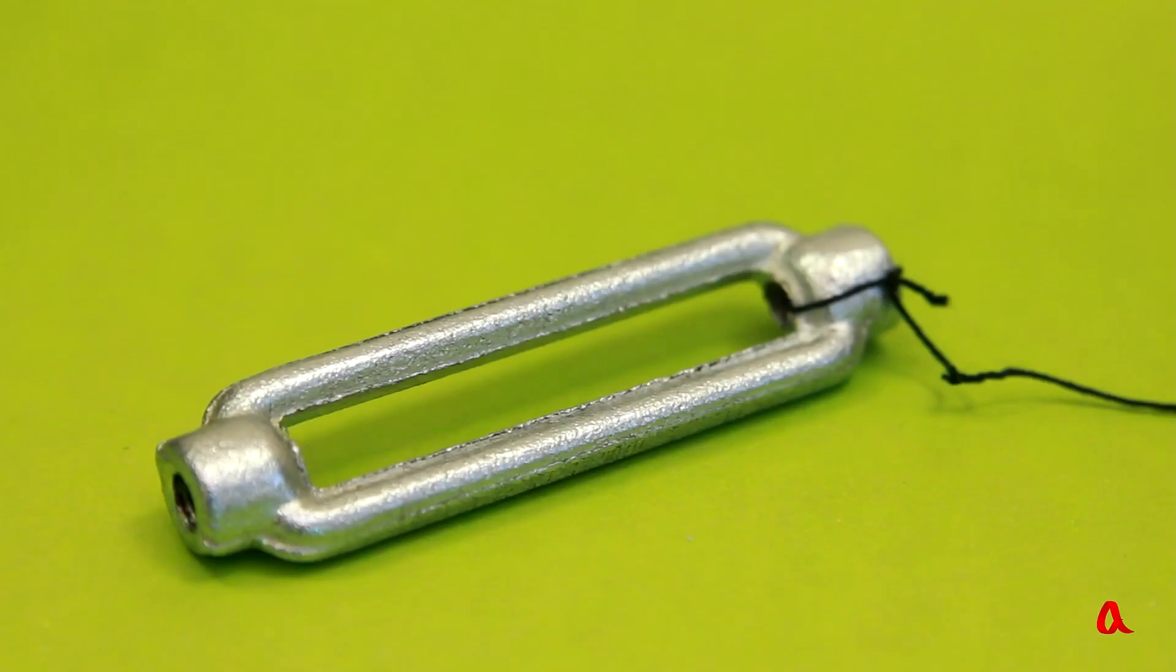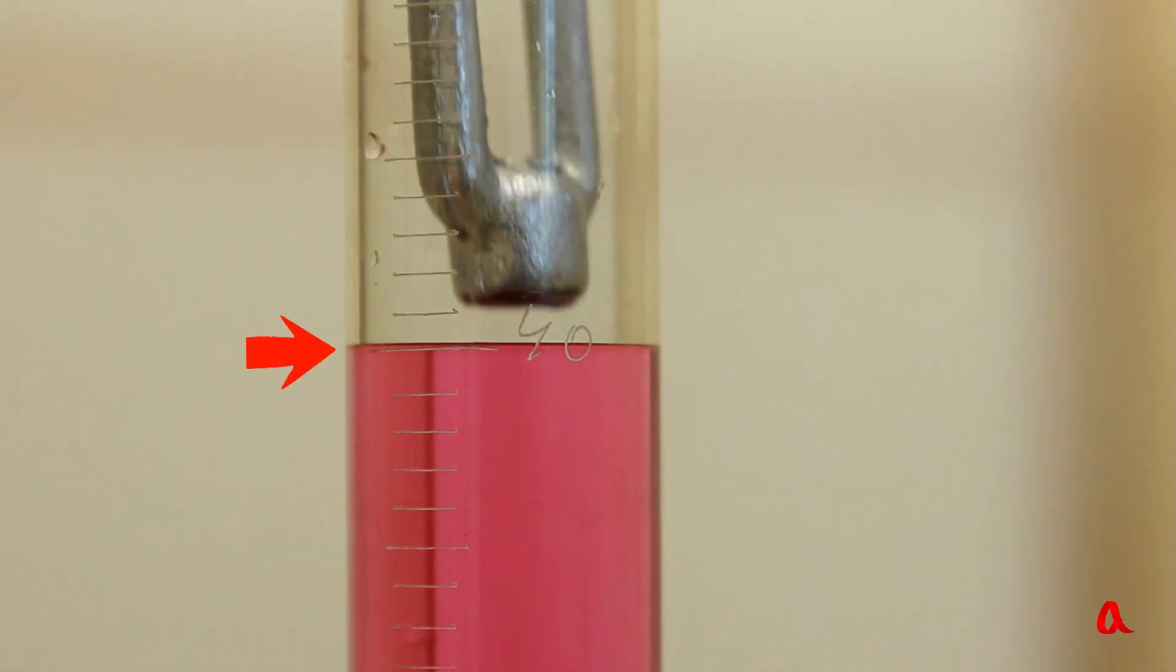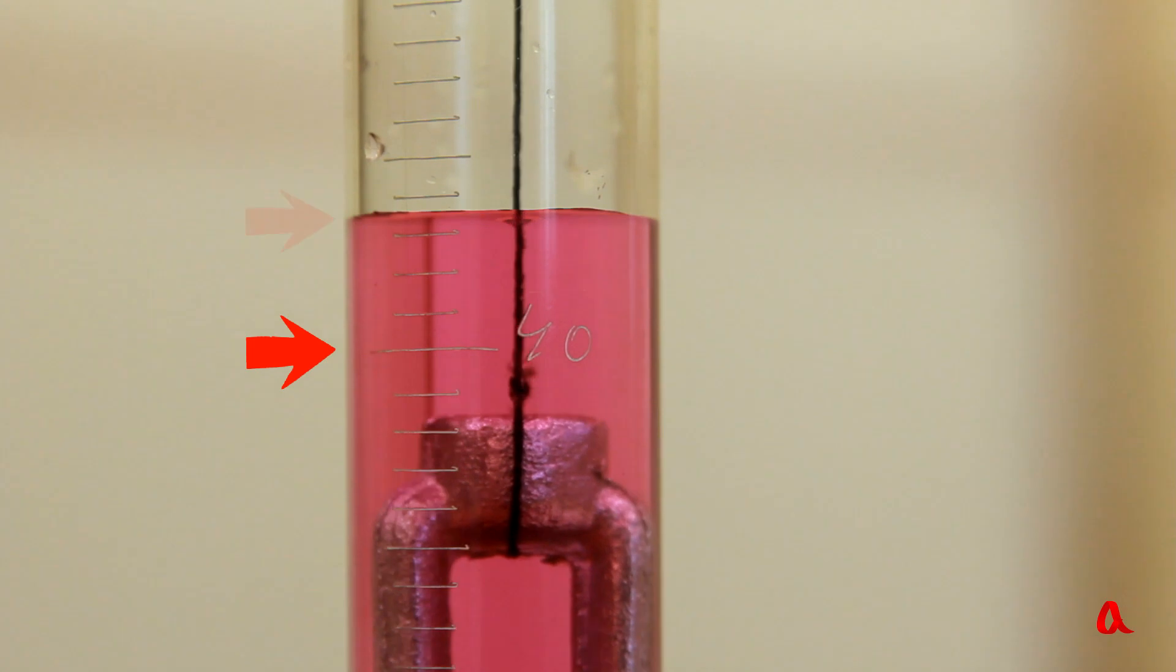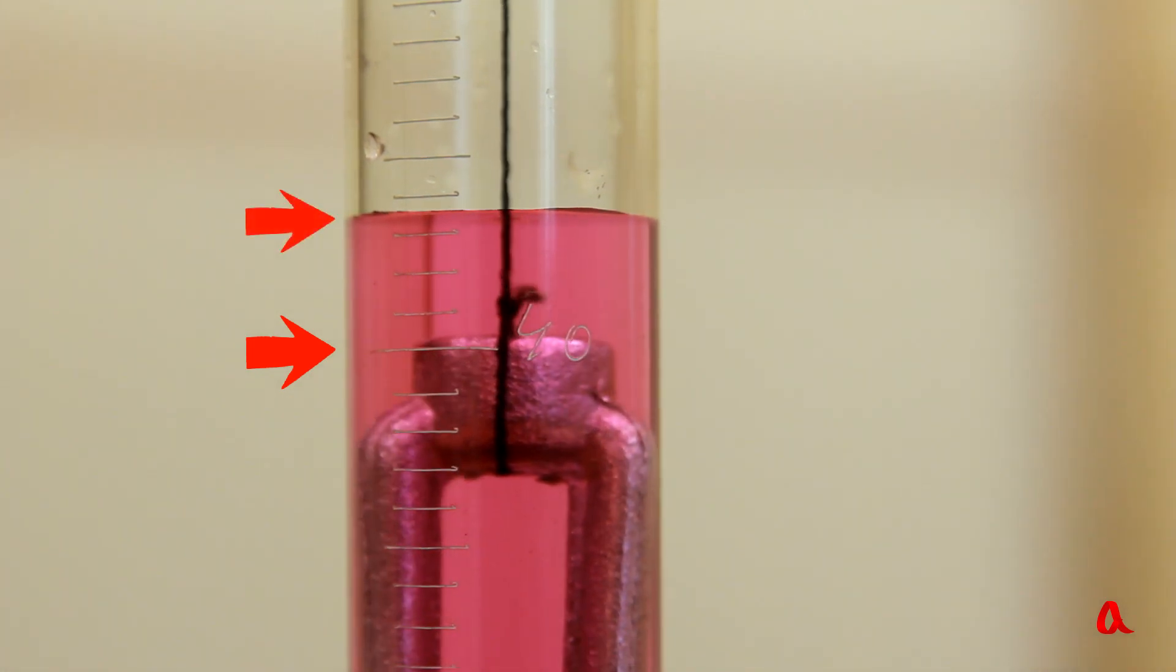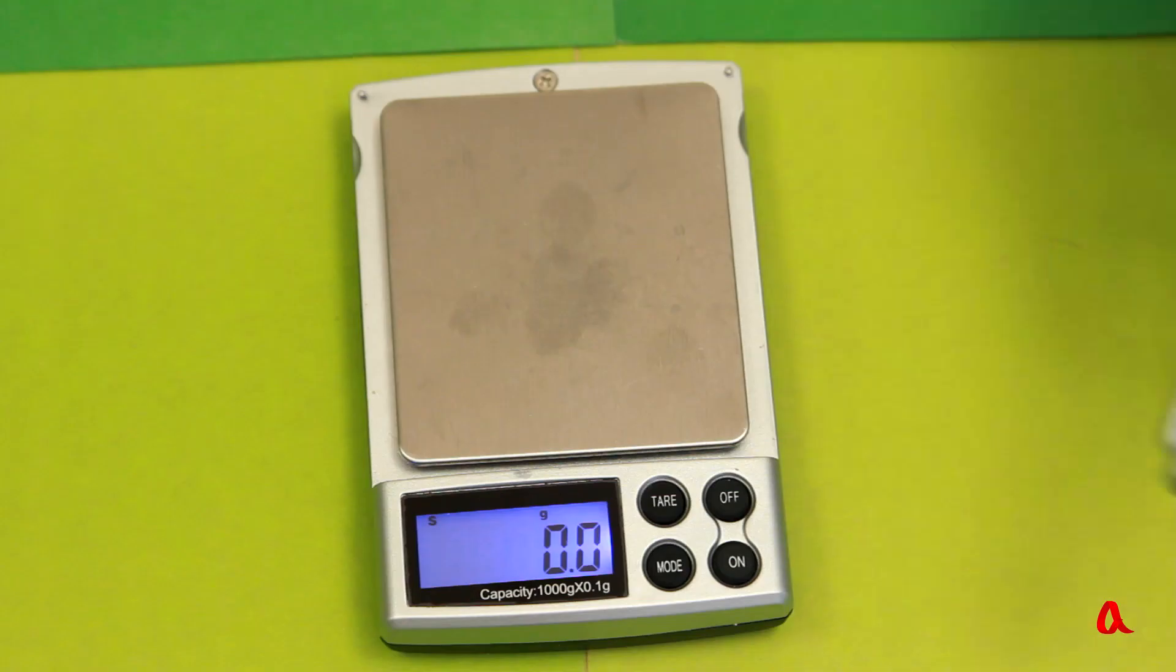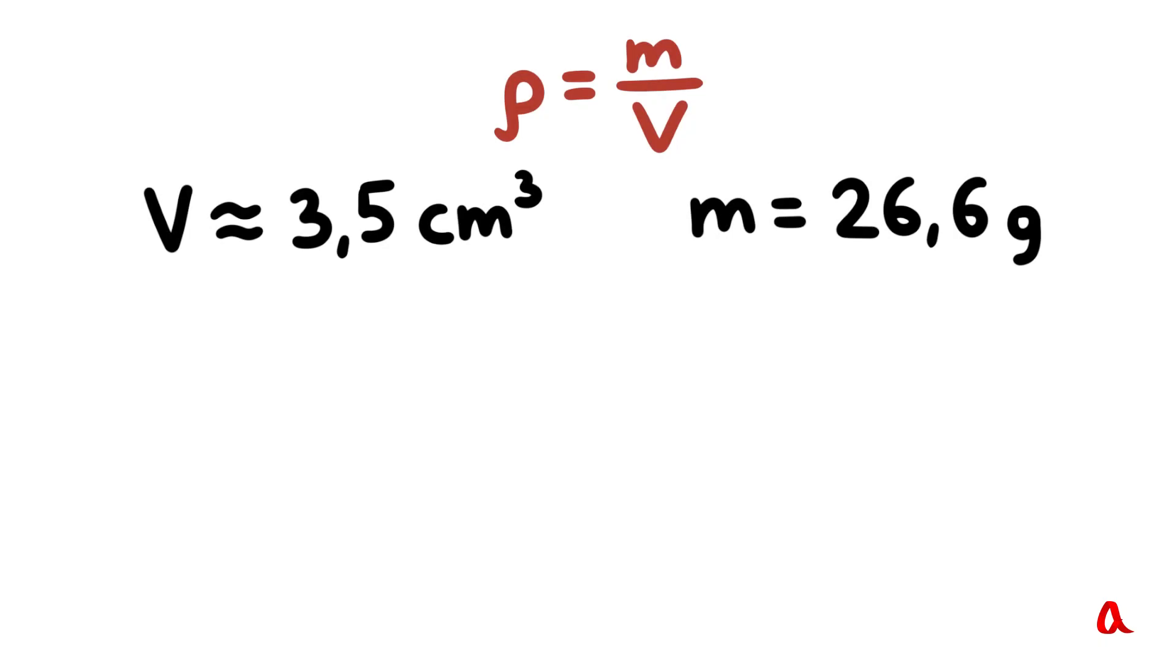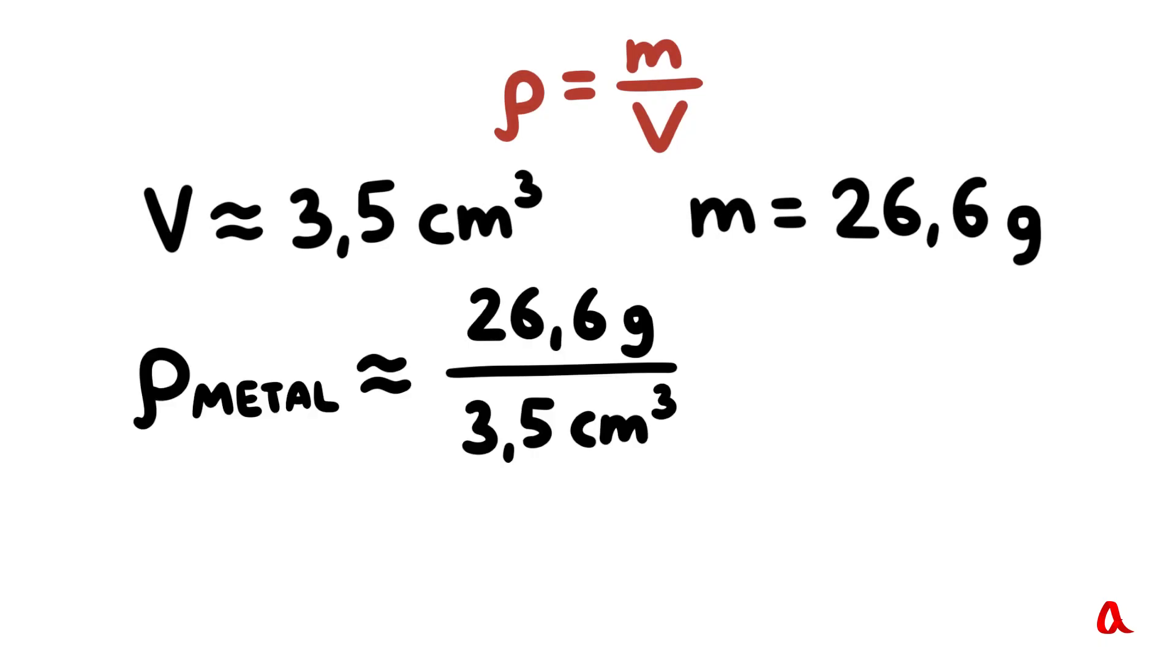Let us determine the density of the metal this piece is made of. We find out its volume with the help of a measuring glass. It is approximately 3.5 cubic centimeters. Next, we weigh it up. It weighs 26.6 grams. We divide 26.6 by 3.5 and we get the density.